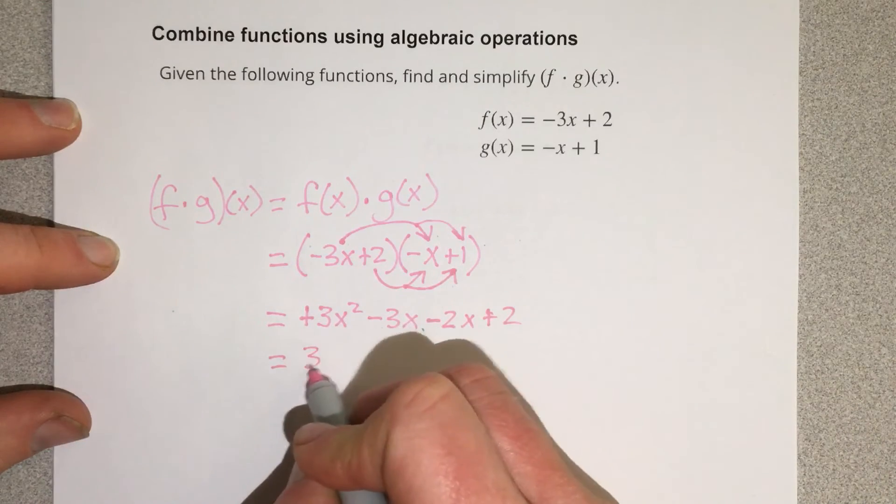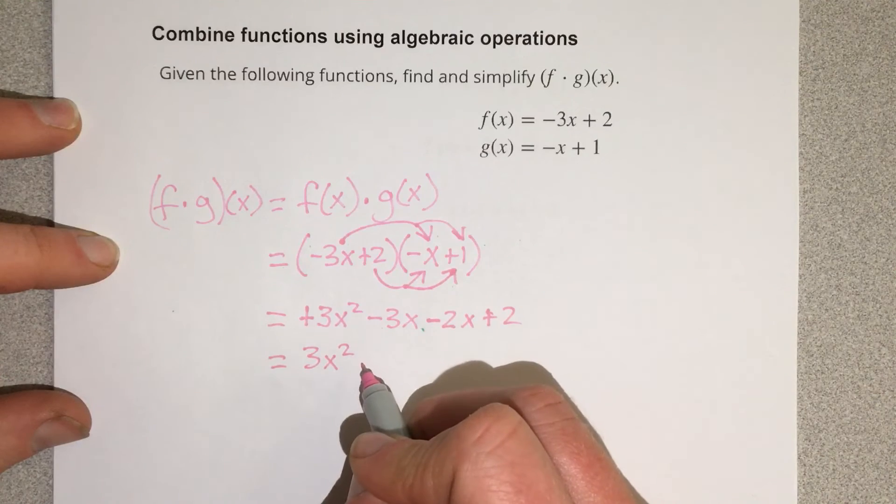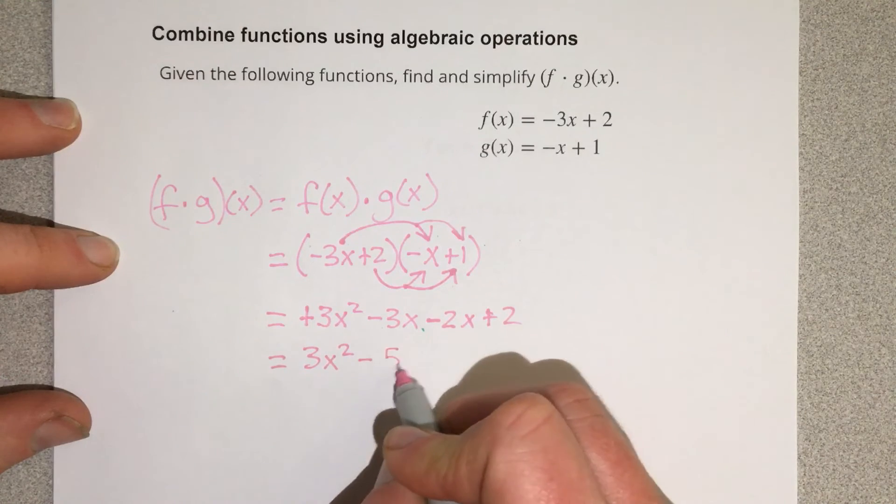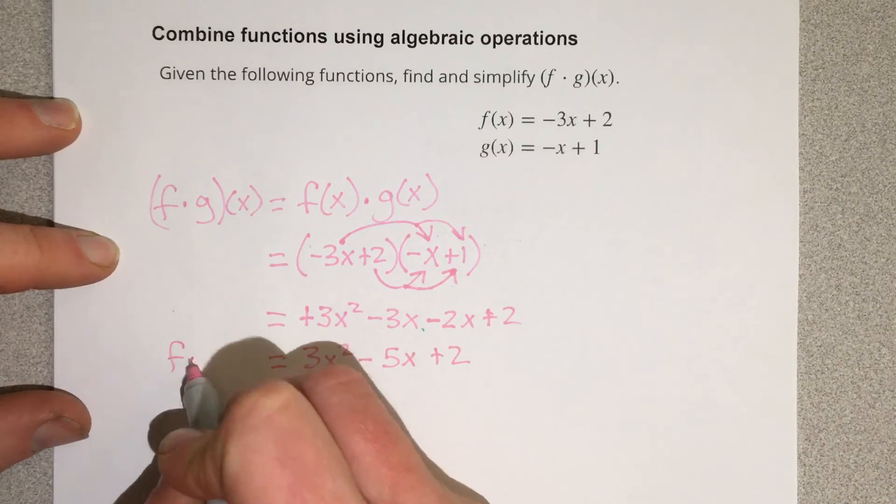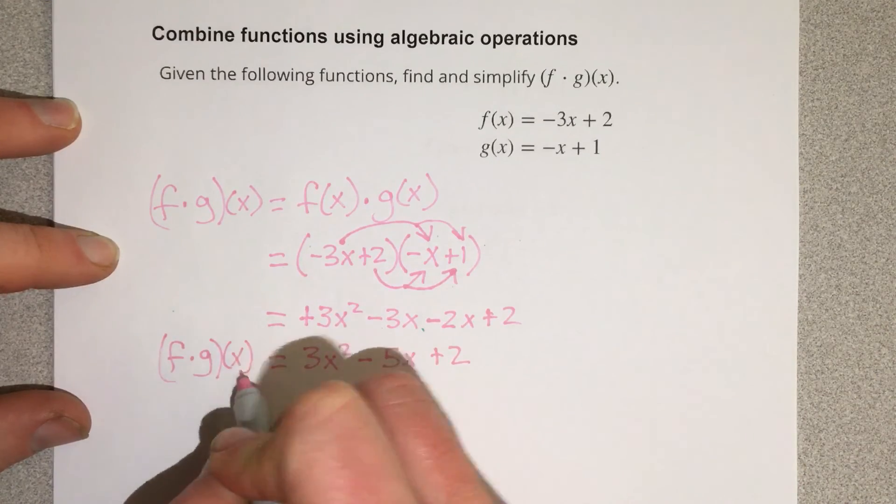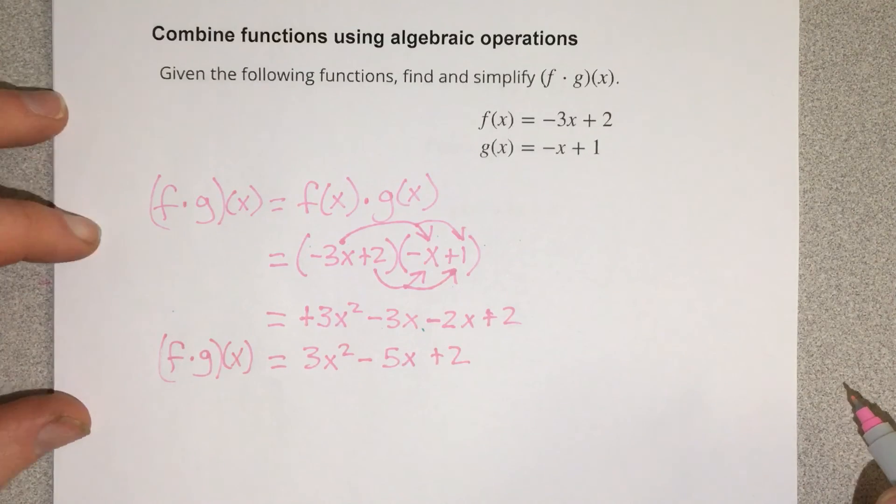That gives me 3x squared minus 5x plus 2 for the f times g of x function.